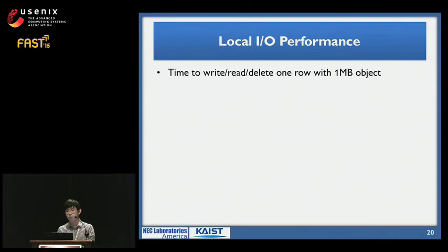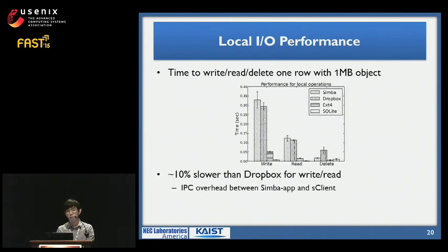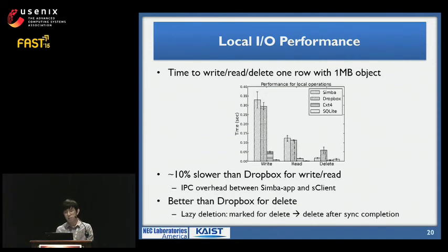Next, we measured local IO performance — write, read, and delete — compared to Dropbox. We measured the time for local IO on a single row containing a one-megabyte object. The y-axis shows time in seconds, and we include base performance for ext4 and SQLite as reference. Simba performs about 10% worse than Dropbox for write, mainly due to IPC overhead from communication between the app and the Simba client. For delete, Simba actually performs better than Dropbox due to its lazy deletion policy, where data is marked for delete but only removed after sync completes.